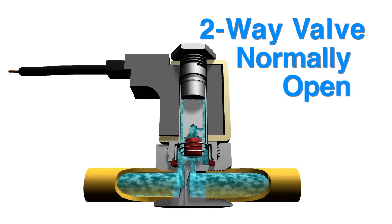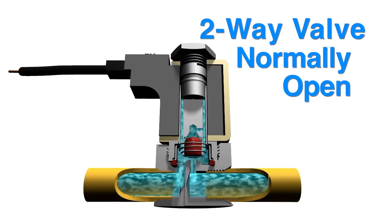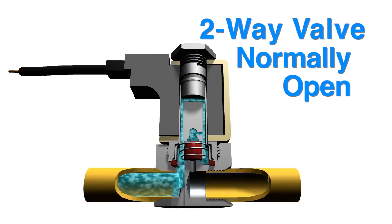Alternatively, in two-way normally open valves, pressure flows from one port to the other when the power is off and the valve is de-energized. Turn the power on and flow ceases.